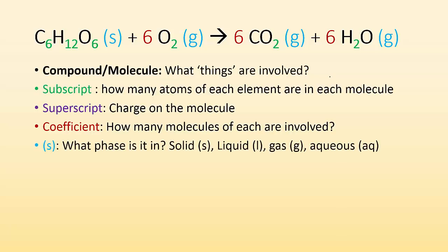What's going on with those things in parentheses? The parentheses are telling you what phase something is in. If there's an S, it's a solid phase; L for liquid; G for gas; and AQ for aqueous, meaning it's a solution — it was dissolved. So you can see we start with solid sugar, the oxygen is in the gas phase, the carbon dioxide is in the gas phase, and the water is in the gas phase.